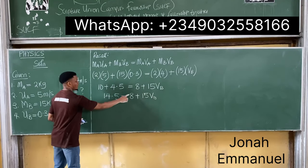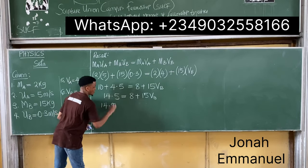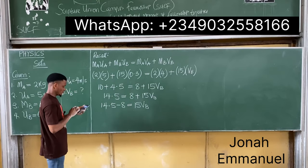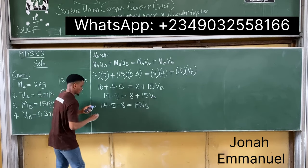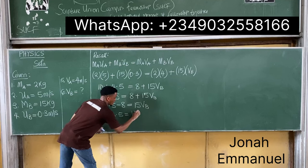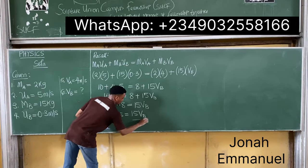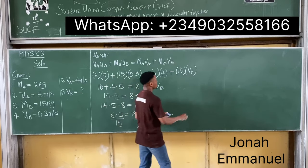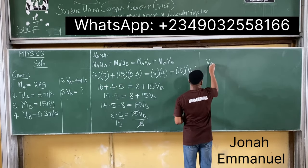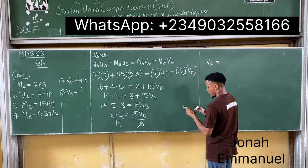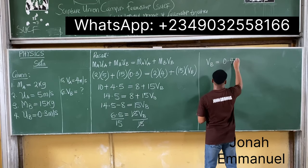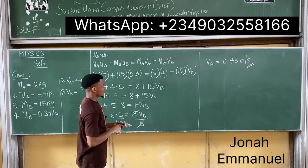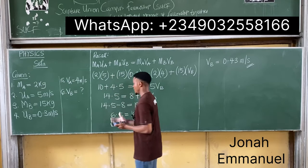Solving for v_b: 14.5 − 8 = 15·v_b, so 6.5 = 15·v_b. Dividing both sides by 15 gives v_b = 6.5 / 15 ≈ 0.43 m/s. This is the final velocity of the 15 kg body after collision.